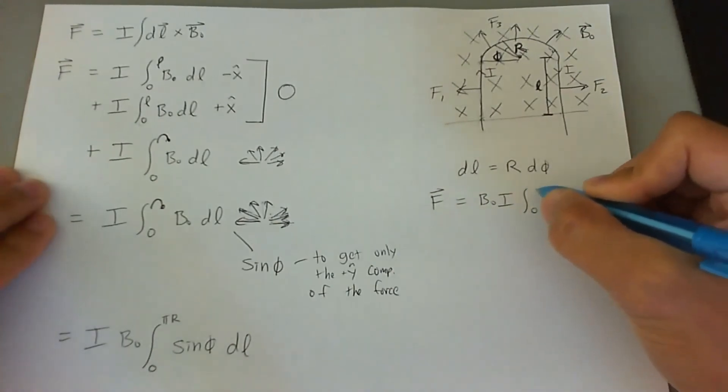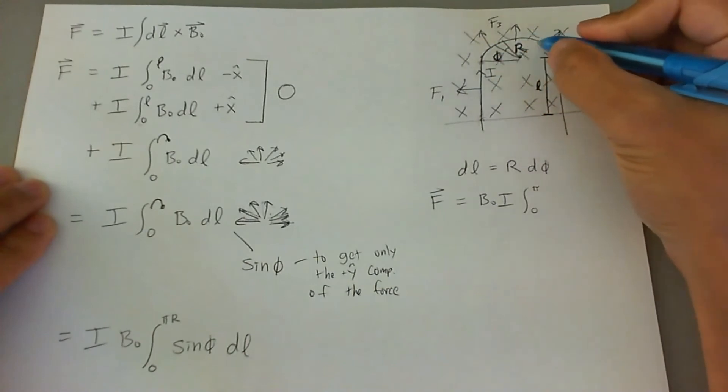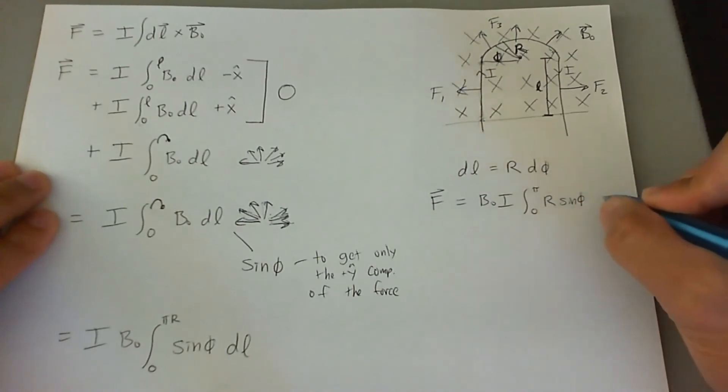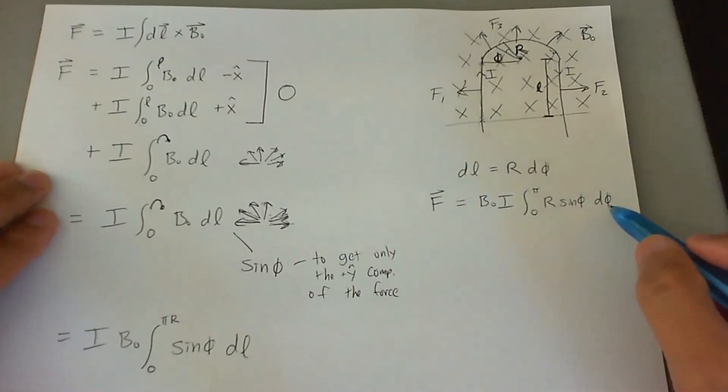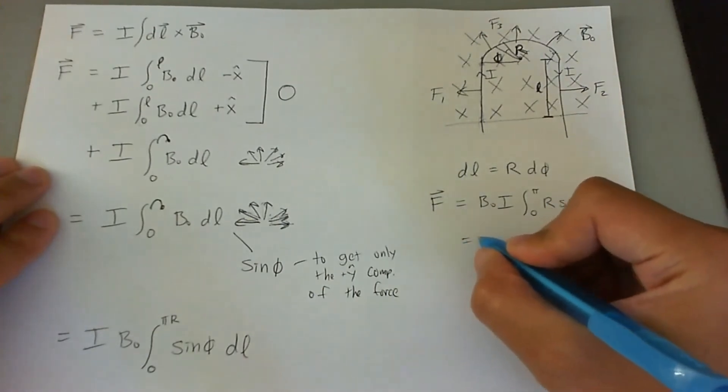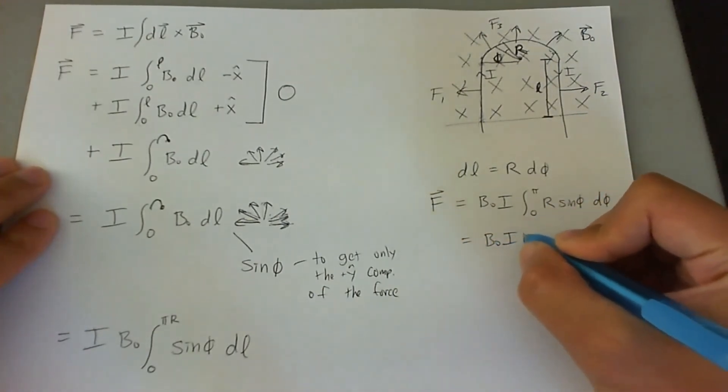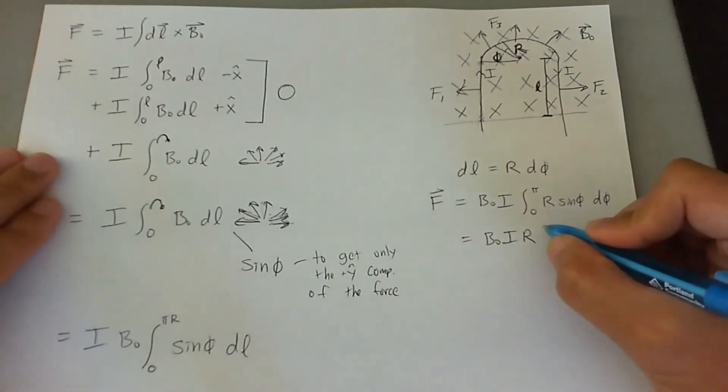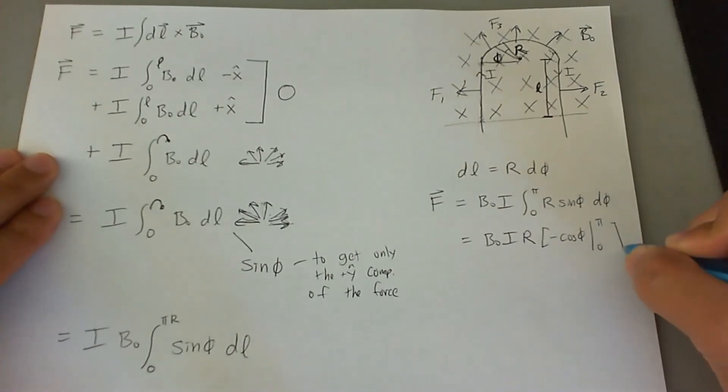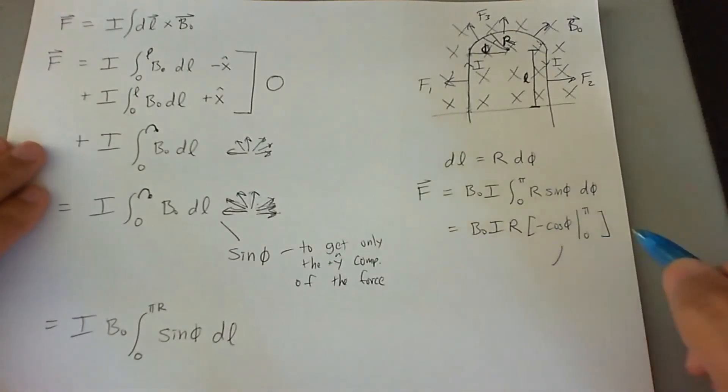You can now plug it in to the integral. And now it's going to be from zero to pi. And we're going to have I B0 r sine phi d phi. R comes out, analyze the integral of sine, and you're going to get integral of sine is a negative cosine phi, and it's going to be from limits of zero to pi. You got a negative here. Now, cosine of pi is negative one. Cosine of zero is just a positive one. So this becomes a negative two in here.